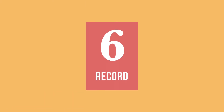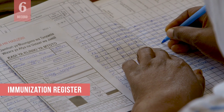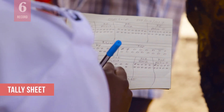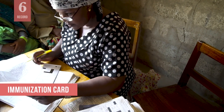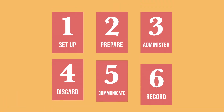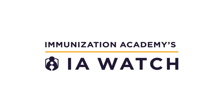Finally, evaluate how health workers record immunization data. Did they complete the immunization register for each child before they moved to the vaccination area? Did the vaccinator mark the tally sheet after administering the vaccine? Did she fill in the child's immunization card with the date for each vaccination and the date for the next immunization? You should now know how to evaluate vaccine administration practices during an immunization session.